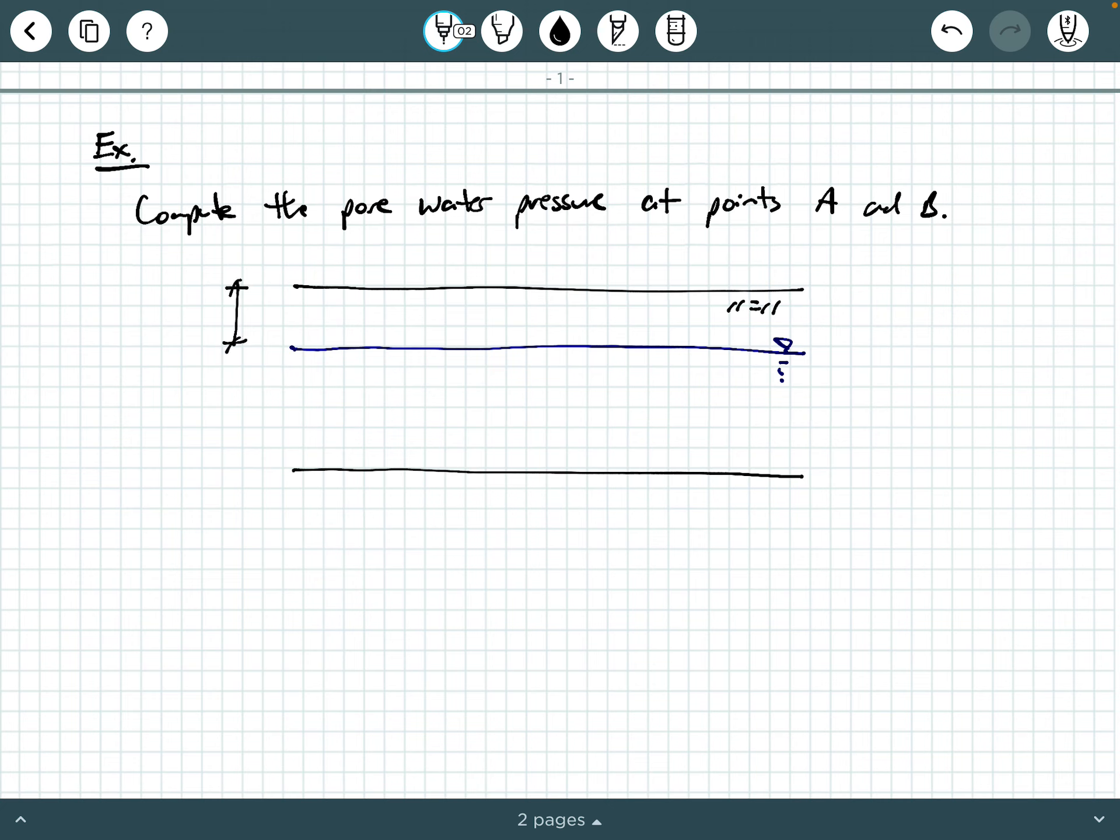And then we're going to have a whole lot of soil underneath it. We're going to say the height of soil above the groundwater table is 5 feet. And then at 4 feet below the groundwater table, we have a point A. And then another 2 feet underneath the groundwater table over here somewhere, we have a point B.